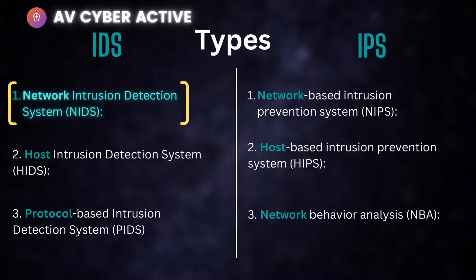Starting with the types of IDS — the first is network-based IDS. As we saw in the previous diagram, it's placed in the network, and it is only able to detect and then doesn't do anything else. It detects and forwards the packet to an intelligence solution, and it's up to the end user to determine what action should be taken on the packet received.